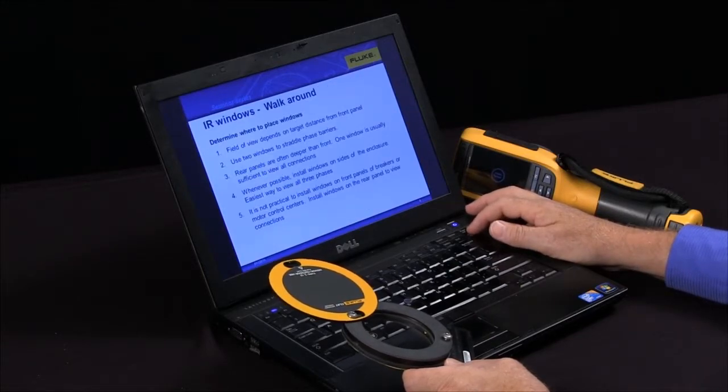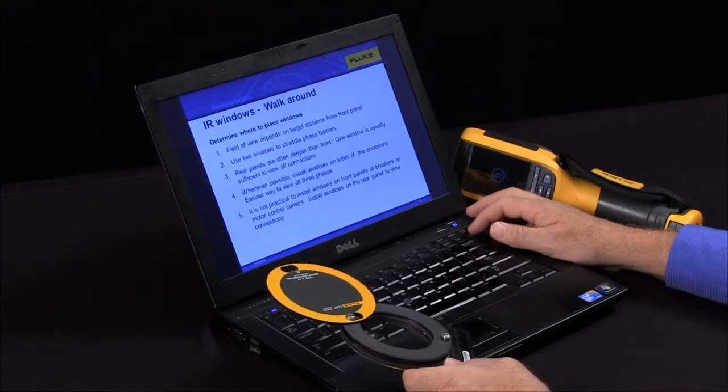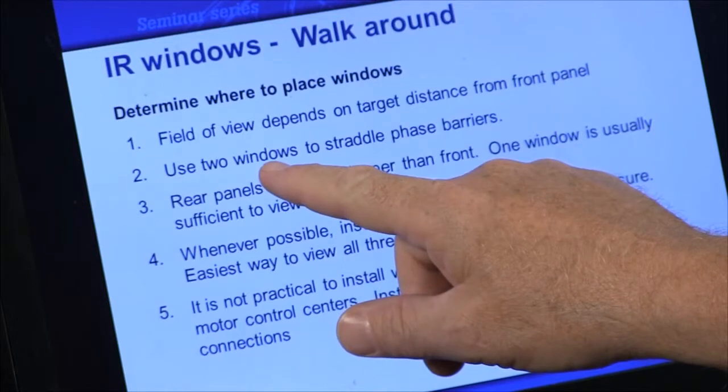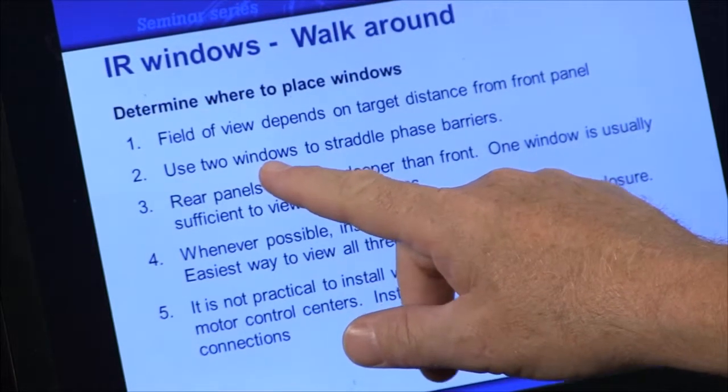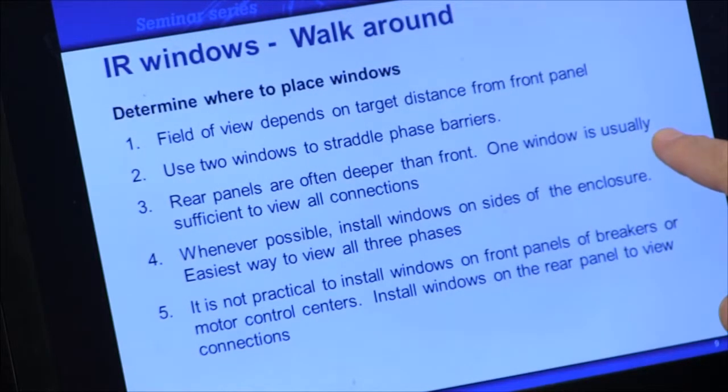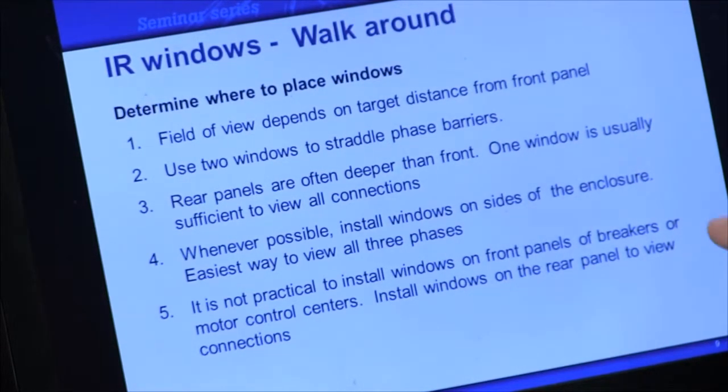So to determine how many windows you need, it really helps to walk around and look at your cabinets. If you have things like phase barriers, there's ways we can straddle that with two windows so you don't need to have three. If you're working with rear panels, they're often deeper than the front, and sometimes it's not practical to install the window on the front panel. If you install it on the rear or the side, you can see very well.